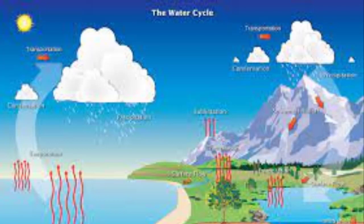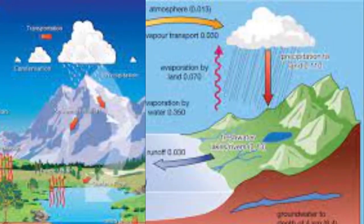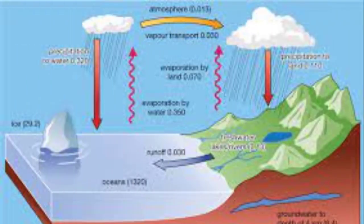The hydrosphere includes water that is on the surface of the Earth, underground, and in the air. Hydrosphere water collects in clouds and then falls to Earth in the form of rain or snow. This water collects in rivers, lakes, and oceans.